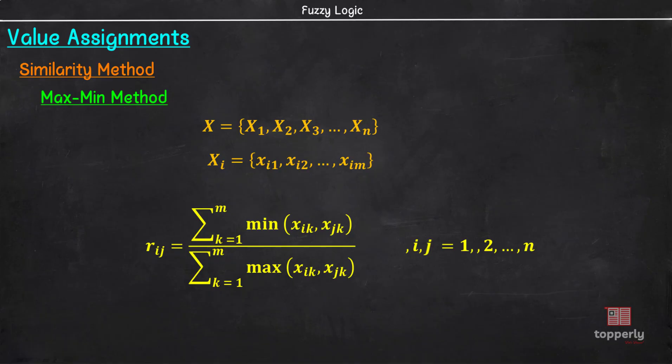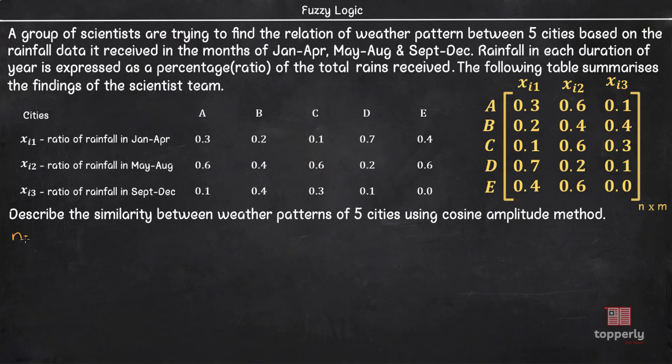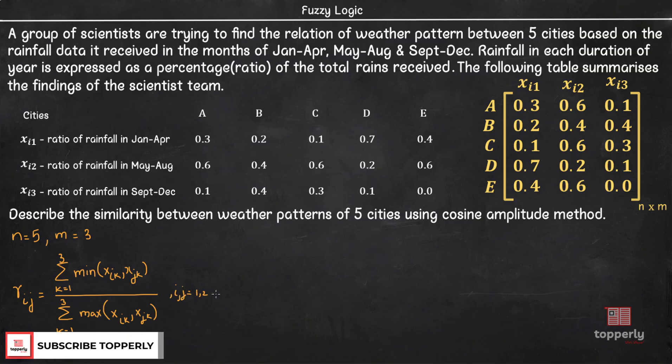Then, if we consider the same example as before, n equals 5 and m equals 3. So, Rij equals sigma k equal to 1 to 3 minimum of (xik, xjk) divided by sigma k equal to 1 to 3 maximum of (xik, xjk) where i and j varies from 1 to 5.